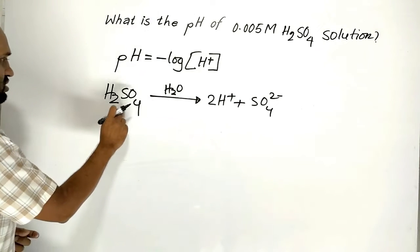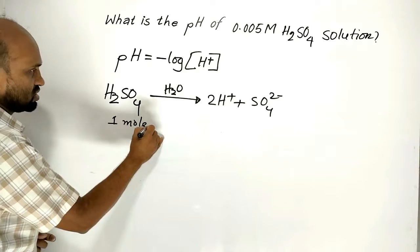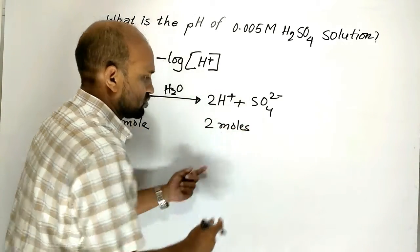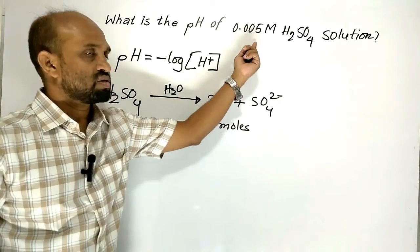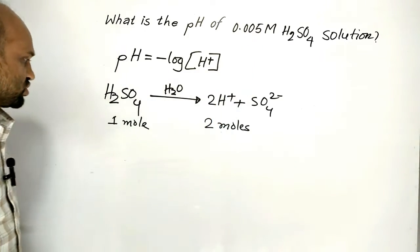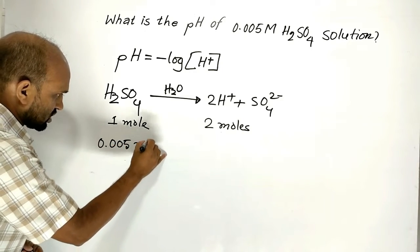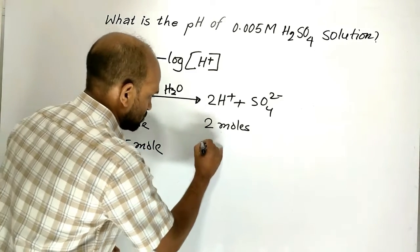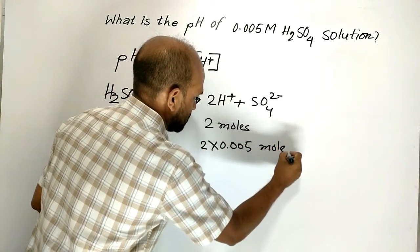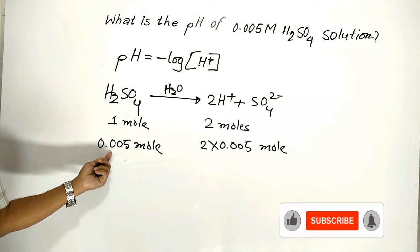Here we see that one mole sulfuric acid produces two moles of protons. In the question, sulfuric acid is 0.005 mole, so 0.005 mole sulfuric acid produces 2×0.005 moles of protons.